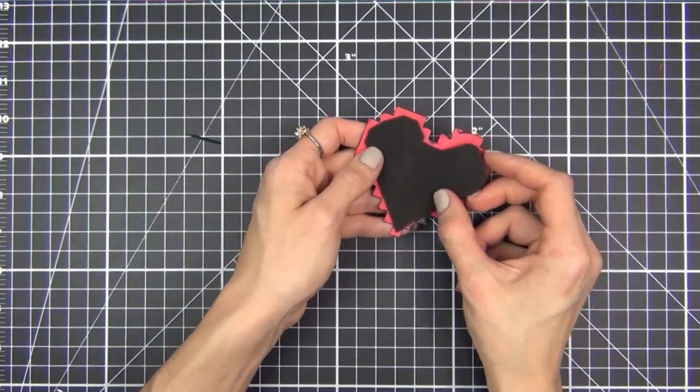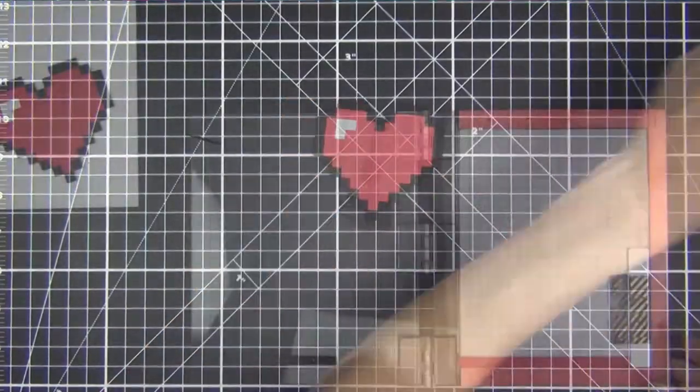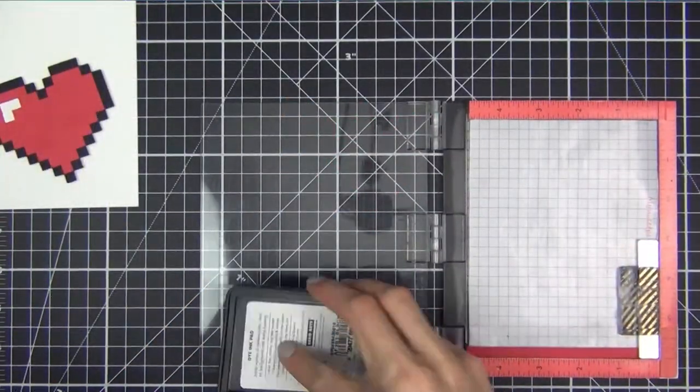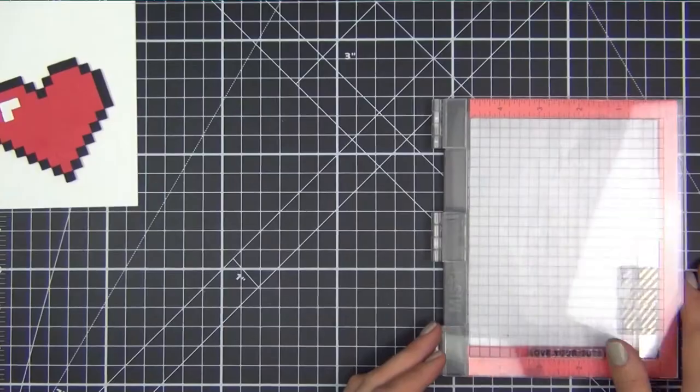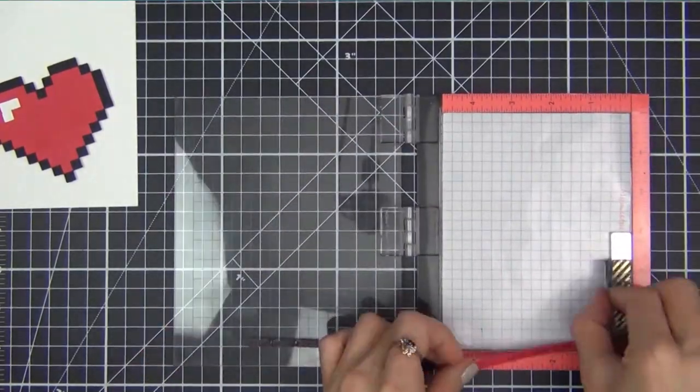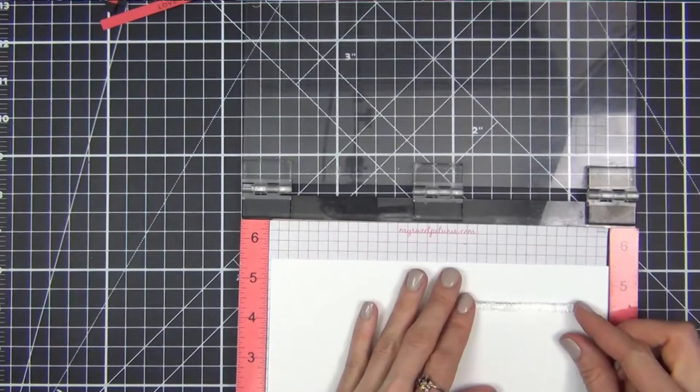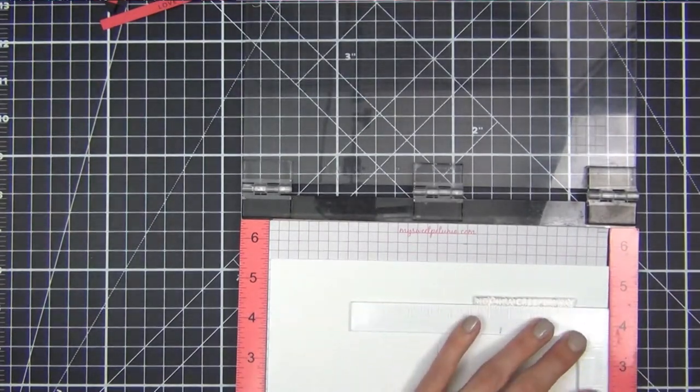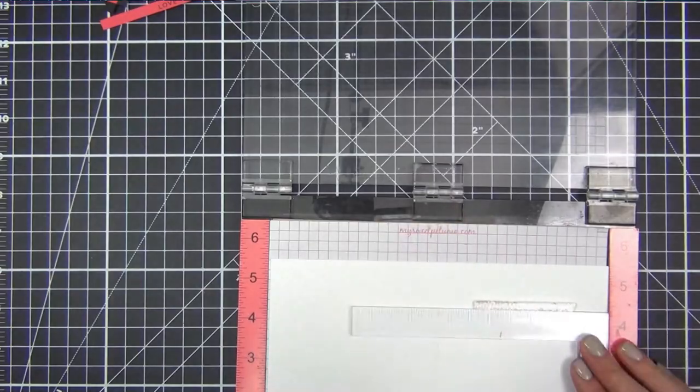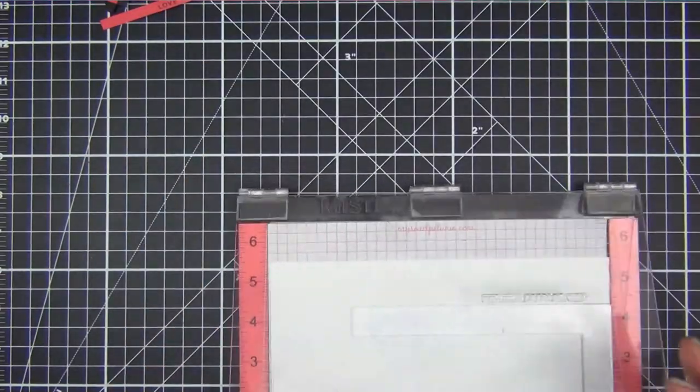I set that aside and move on to the sentiment. I took one of the leftover red strips of cardstock and placed it in my MISTI so I could get a nice solid and straight impression. If you don't have a stamping tool, you can definitely just use an acrylic block for this.